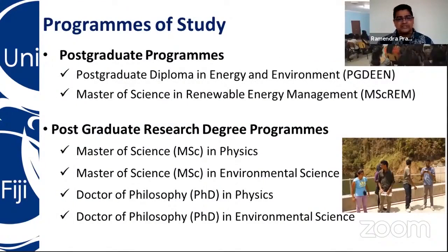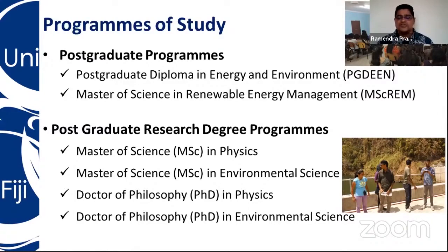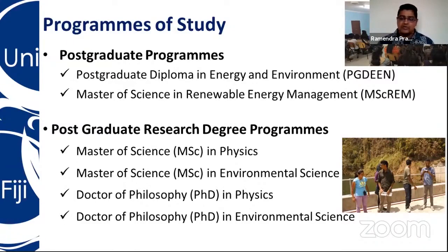After doing your undergrad, if you want to do a postgraduate, we have a postgraduate diploma in energy and environment and a Master of Science in renewable energy management. The postgraduate diploma in energy and environment is a one-year program. The Master of Science is usually a two-year program, whereby you have to do six courses and a minor thesis. We also have postgraduate research degree programs where you do a full thesis — Master of Science in physics or environmental science, and PhD in physics and environmental sciences.